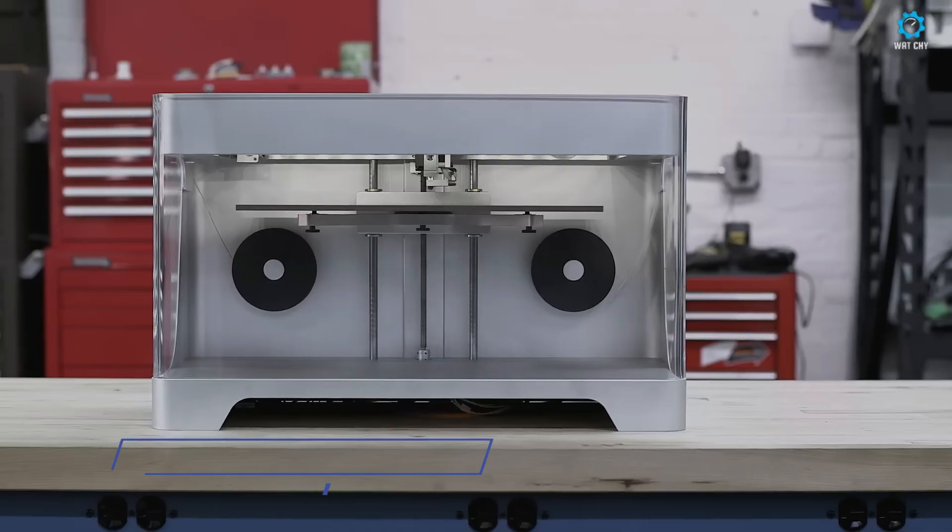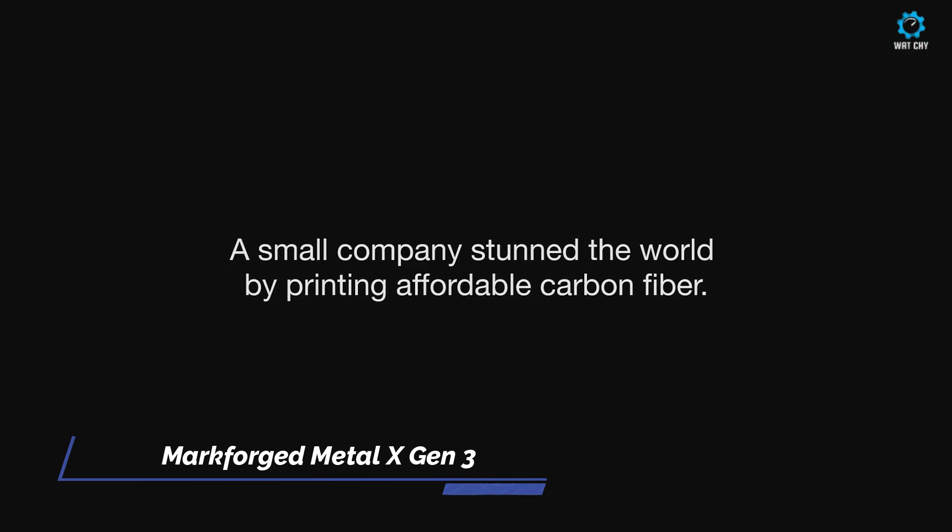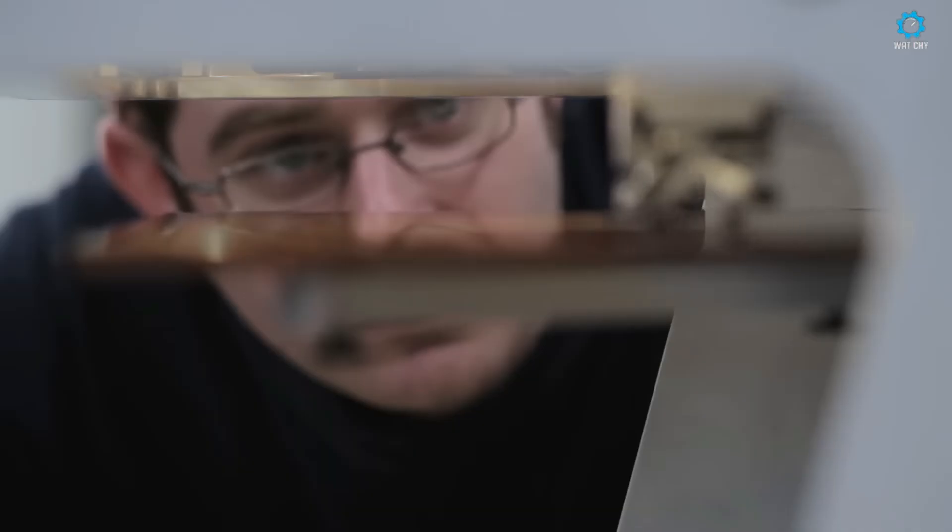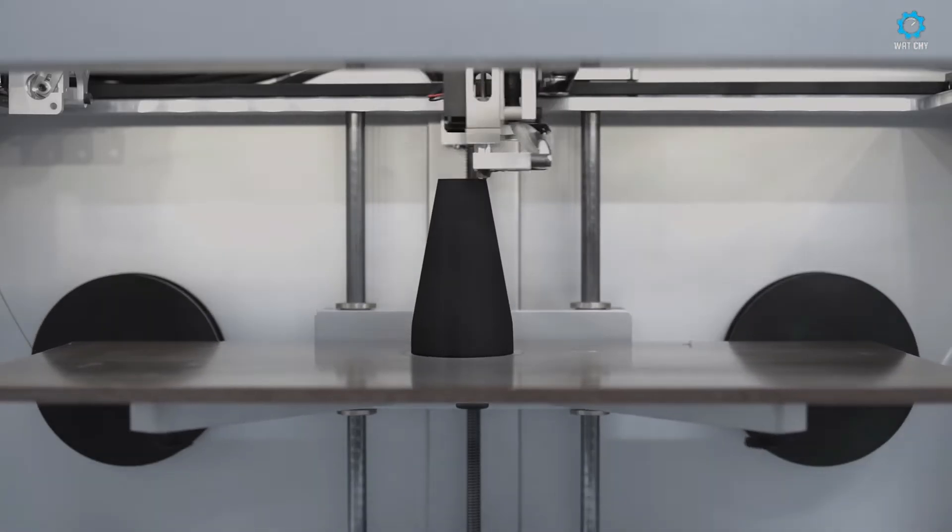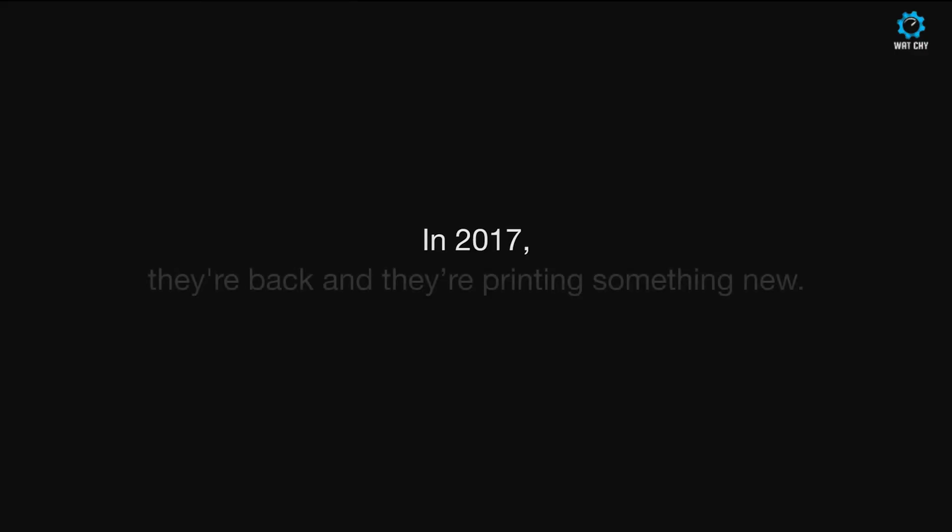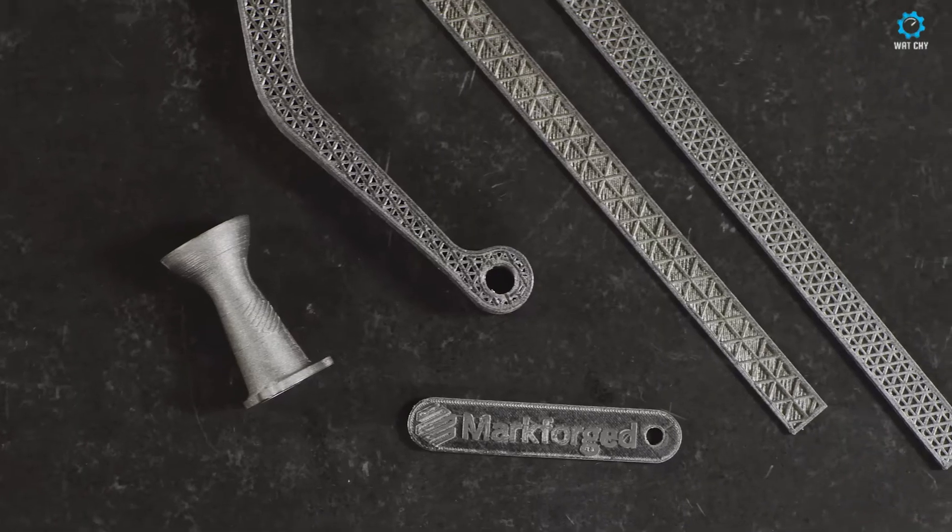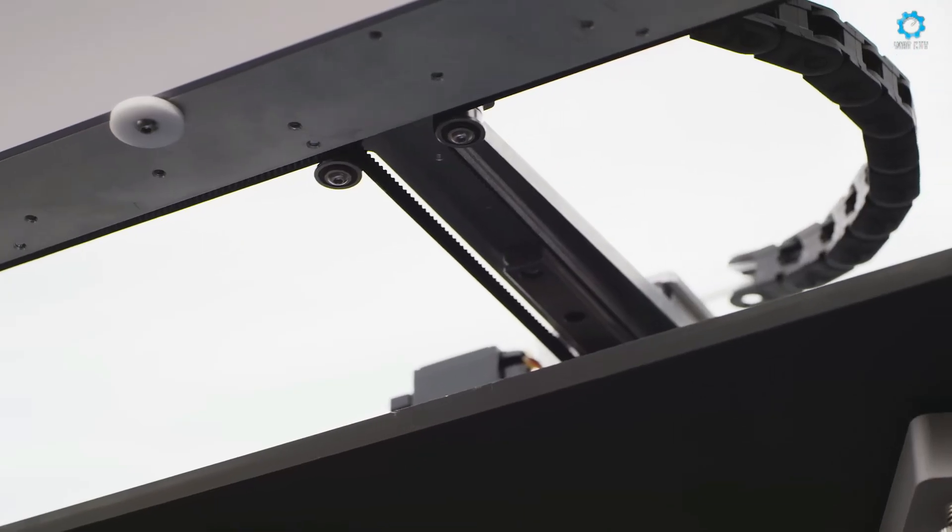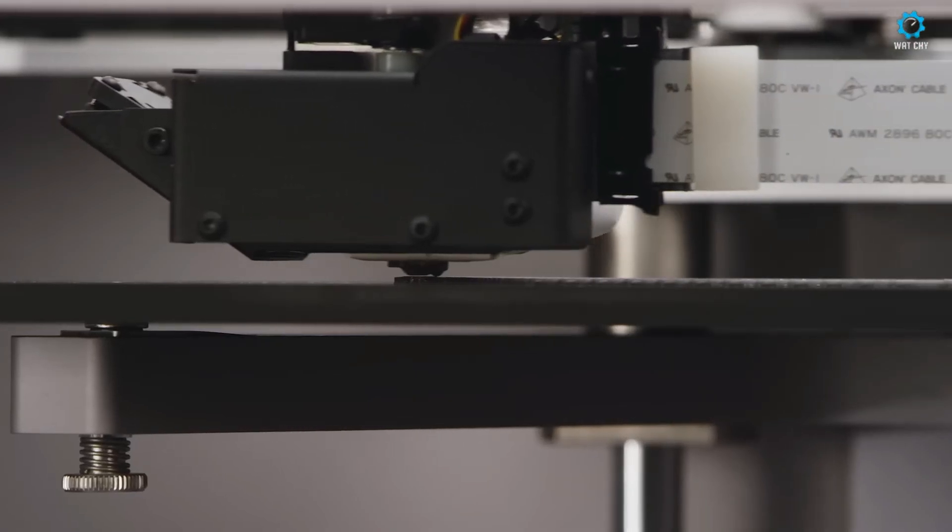The Markforged Metal X Gen3 takes a unique approach to metal 3D printing with its Bound Metal Deposition Technology, a process that combines metal powder and polymer binder into a single filament. This enables easy handling of the materials and simplifies the printing process, making it accessible for small-scale manufacturers, engineers, and prototyping applications.